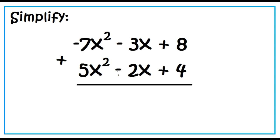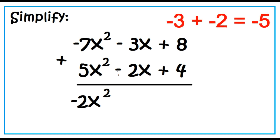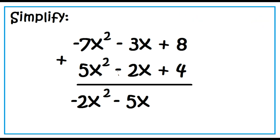Simplify: the quantity negative 7x squared minus 3x plus 8, plus the quantity 5x squared minus 2x plus 4. Combining similar terms: negative 7x squared plus 5x squared is negative 2x squared; negative 3x plus negative 2x is negative 5x; 8 plus 4 equals 12. The answer is negative 2x squared minus 5x plus 12.